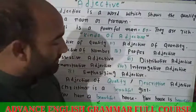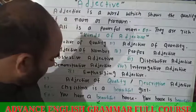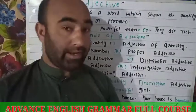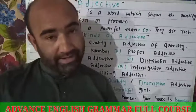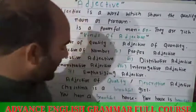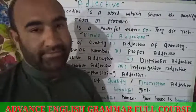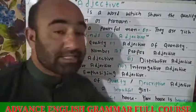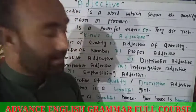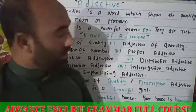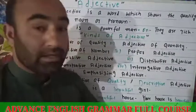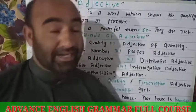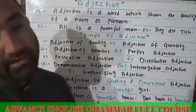Here is a very important point. Whenever the adjective comes before a noun, it is called an attributive adjective. For example: 'You have a beautiful house' — beautiful is attributive. When it comes after the main verb, as in 'Your house is beautiful,' it is called a predicative adjective, because it plays the role of complement and is part of the predicate.